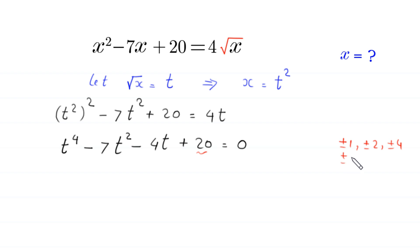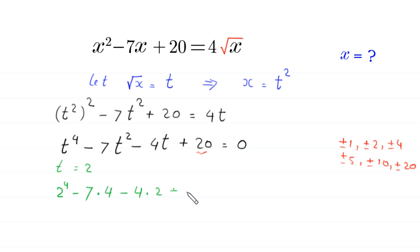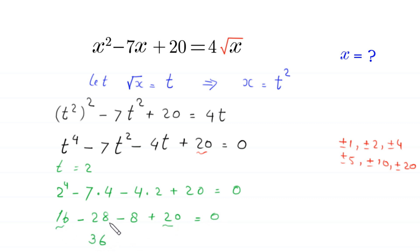The factors of 20 are plus or minus 1, plus or minus 2, plus or minus 4, plus or minus 5, plus or minus 10, and plus or minus 20. If we put t equal to 2 in this equation, we get 2 to the power 4 minus 7 times 2 squared minus 4 times 2 plus 20, which gives 16 minus 28 minus 8 plus 20 equals 0. So t equals 2 is a root and t minus 2 is a factor.